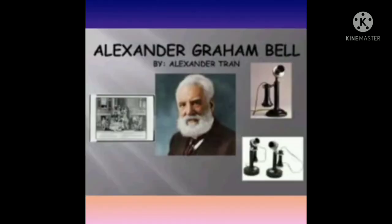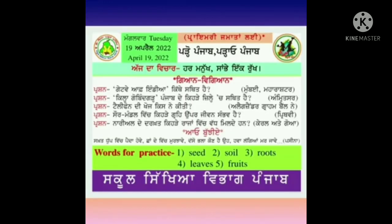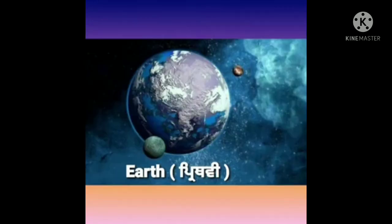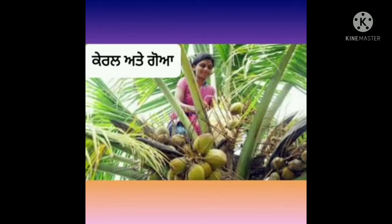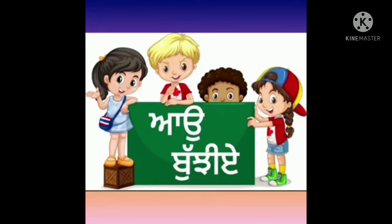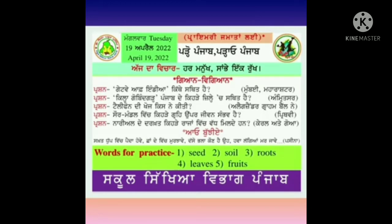Its answer is Alexander Graham Bell. Fourth question: In our solar system, on which planet is life possible? ਸੌਰ ਮੰਡਲ ਵਿੱਚ ਕਿਹੜੇ ਗ੍ਰਹਿ ਉੱਪਰ ਜੀਵਨ ਸੰਭਵ ਹੈ? Its answer is Earth - ਧਰਤੀ। Fifth question: In which states are coconut trees mostly found? ਨਾਰੀਅਲ ਦੇ ਦਰੱਖਤ ਕਿਹੜੇ ਰਾਜਾਂ ਵਿੱਚ ਵੱਧ ਮਿਲਦੇ ਹਨ? Its answer is Kerala and Goa.